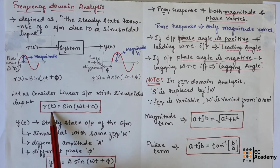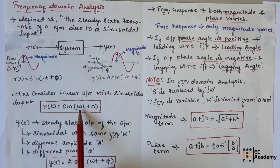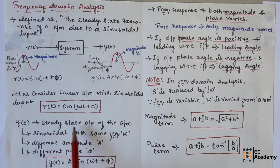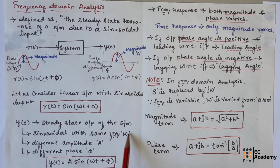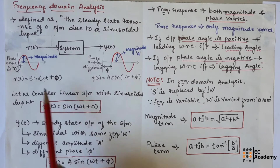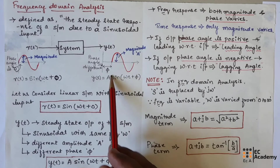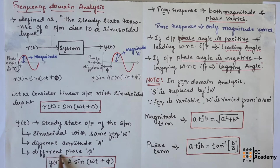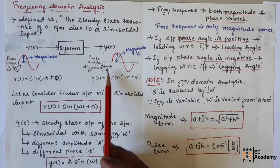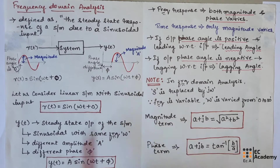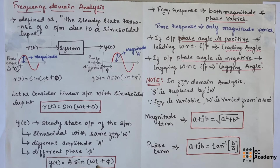The output is the steady state output of this system. This output is sinusoidal with the same frequency ω — the frequency will be the same as the input signal. But the output will have a different amplitude A and a different phase φ. So we can represent the output as Y(t) = A·sin(ωt + φ).